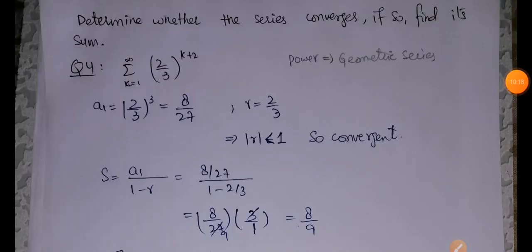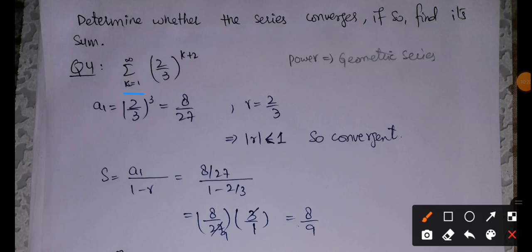Question number 4 from the exercise: the series summation k from 1 to infinity of (2/3)^(k+2). Since we have a power, this is a geometric series. The first term a_1 is found by putting k equal to 1, giving 8/27. The common ratio r equals 2/3, which is less than 1, so the series is convergent. Its sum equals a_1/(1-r), which simplifies to 8/9.